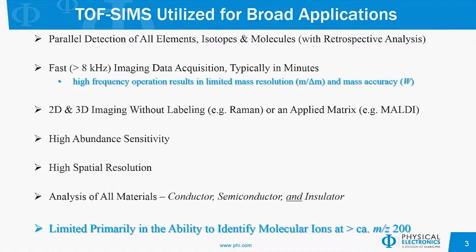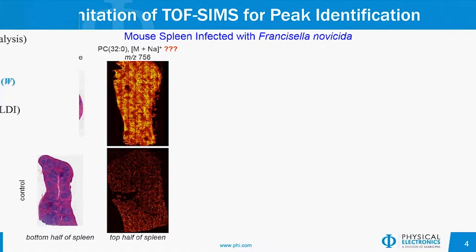Along with the speed inherent with TOF-SIMS imaging, because we're operating at a very high repetition rate, that has an impact on the mass resolution as well as the mass accuracy — two things quite necessary for identification of peaks in the mass spectrum. So one of the biggest disadvantages of TOF-SIMS is the ability to identify molecules that have a mass larger than 200 Daltons.